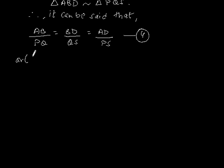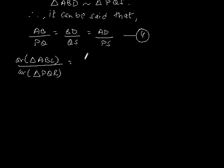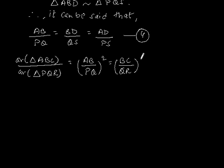And the area of triangle ABC by area of triangle PQR will be equal to AB by PQ whole square, which is equal to BC by QR whole square, and AC by PR whole square.